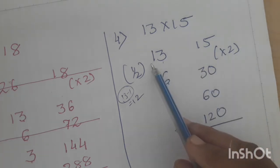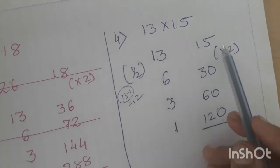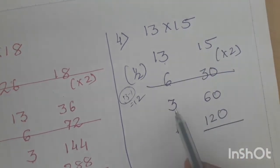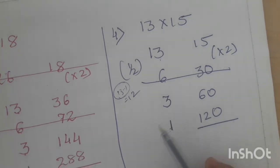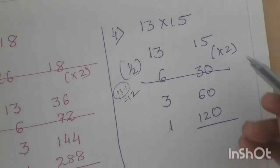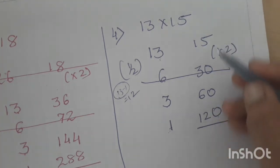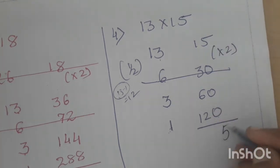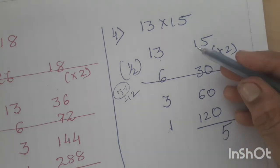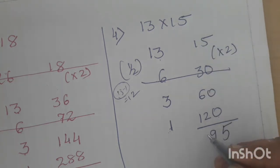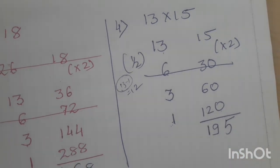Now cancel out the rows where even numbers appear in the halves column. Here 6 is even — cross out. The remaining rows have odd numbers 13, 3, and 1, so keep those. Add the corresponding doubles: 15, 60, and 120. Adding gives 5, then 6 plus 1 is 7 plus 2 is 9, and 1. So your final answer is 195.